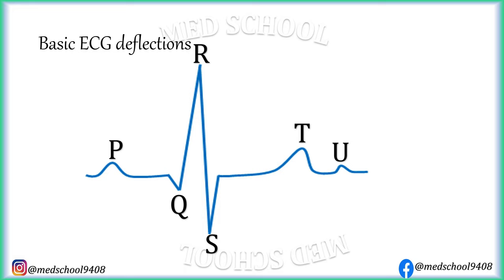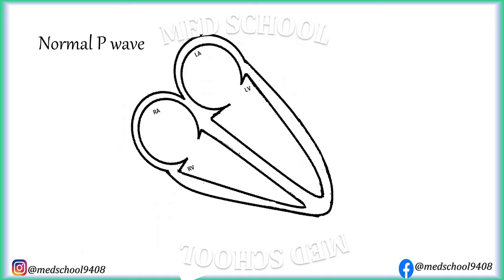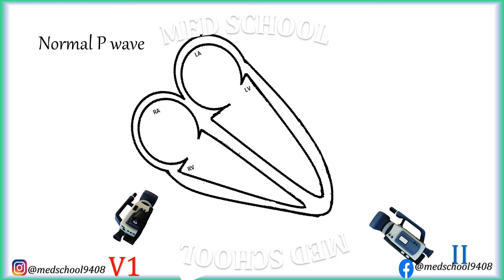Now let's understand how these waves are formed in ECG. P wave is best studied in lead V1 and lead V2. Right atrial depolarization starts before left atrial depolarization. The vector for right atrial depolarization is directed toward the V1 electrode, hence lead V1 shows positive deflection. Left atrial depolarization starts after a slight delay and its vector is directed away from the V1 electrode, hence lead V1 shows negative deflection. Hence, P wave in lead V1 is biphasic with initial positive deflection and terminal small negative deflection.